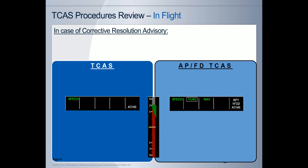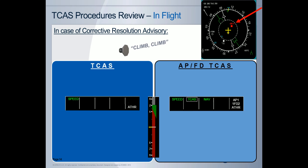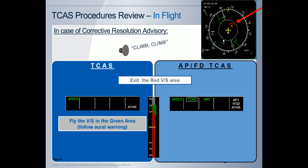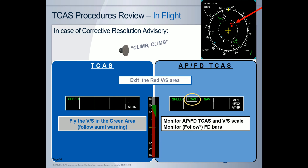Then, if the vertical speed goes into the red area of the scale, the TICAS will trigger a corrective RA — for example, 'climb-climb.' In this case, the procedure is to exit the red vertical speed area. With the standard TICAS, the pilot must increase the vertical speed in order to reach the green area of the vertical speed scale. With the APFD-TICAS function, the pilot monitors that the vertical speed exits the red area and remains within the green area of the speed scale.